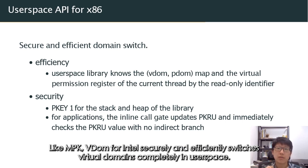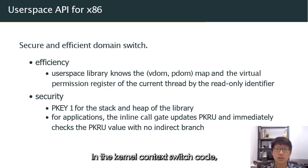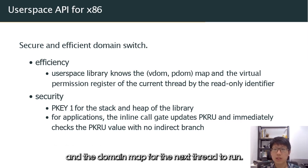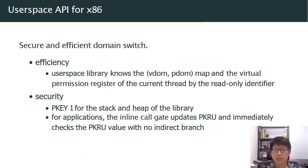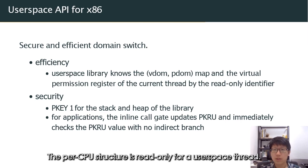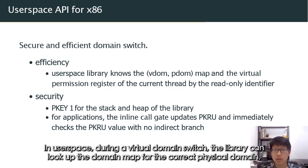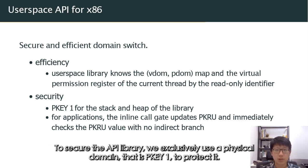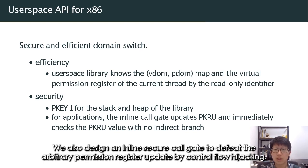Like MPK, VDOM for Intel securely and efficiently switches virtual domains in user space. In the kernel context switch code, we update a per-CPU structure storing the pointer of the virtual permission register for the thread and the domain map for the next thread to run. This structure is made only for a userspace thread. In userspace, during a virtual domain switch, the running thread looks up the domain map for the correct physical domain and updates its own virtual permission register. To secure the API library, we exclusively use physical domain — protection key 1 in MPK — to protect it. We also design a secure call gate to defeat arbitrary permission register updates by control flow hijacking.